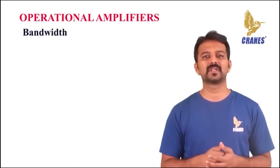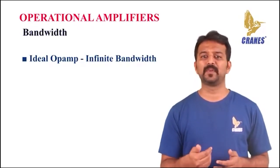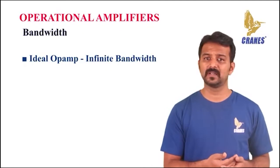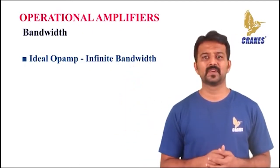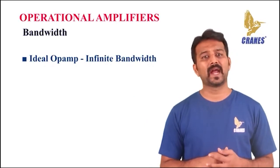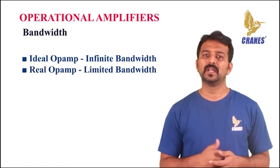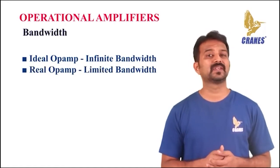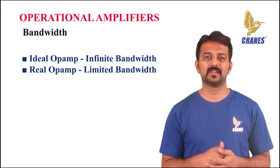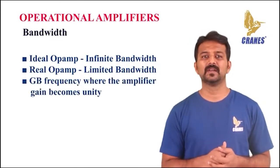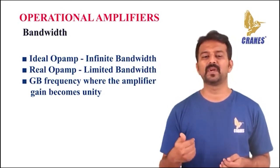The next parameter is bandwidth. An ideal op-amp has an infinite bandwidth — it can amplify any signal from DC to the highest AC frequencies without any losses. Therefore, an ideal op-amp is said to have infinite frequency response. In real op-amps, the bandwidth is generally limited. This limit depends on the gain bandwidth product, called GB, which is defined as the frequency where the amplifier gain becomes unity.